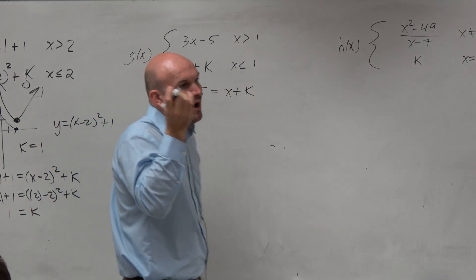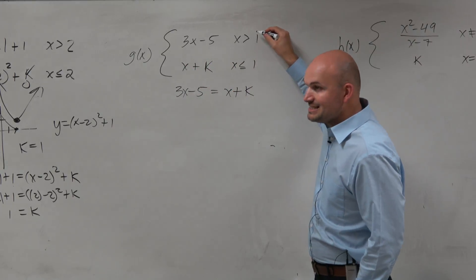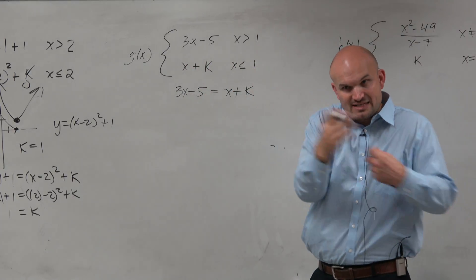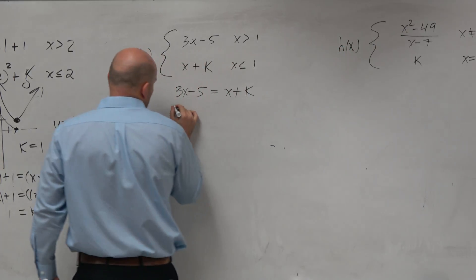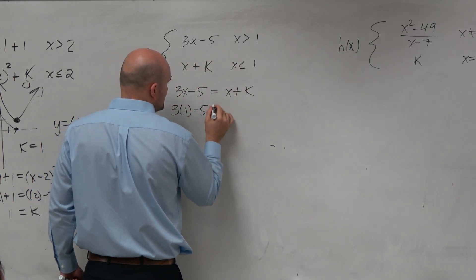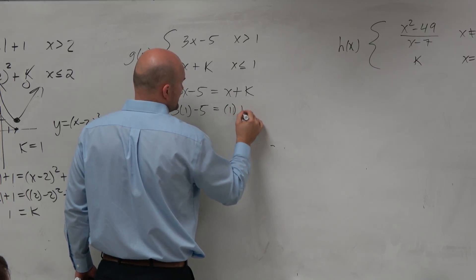And we want the y values to be equal when x is equal to 1, because that's where they were going to connect or not. So I only did that first example to give you guys a visual representation of this.